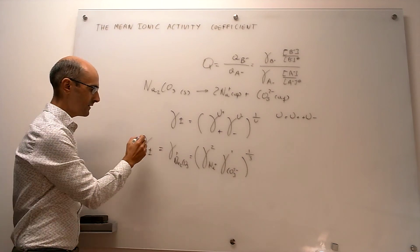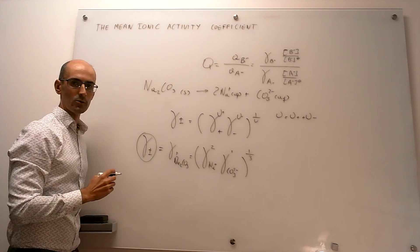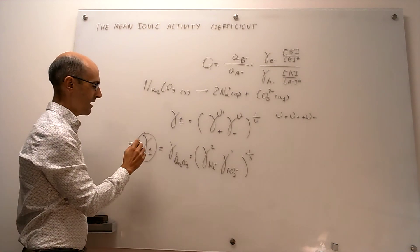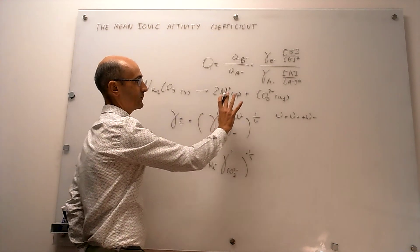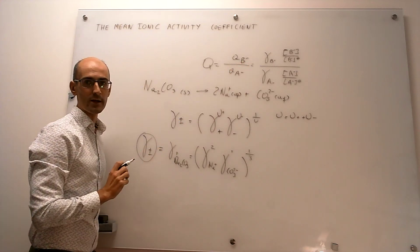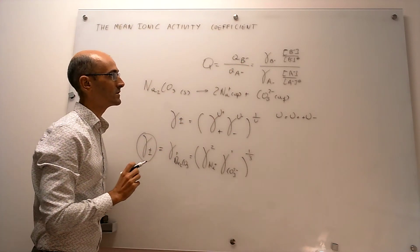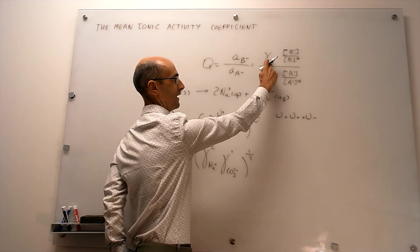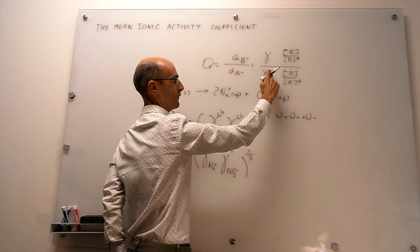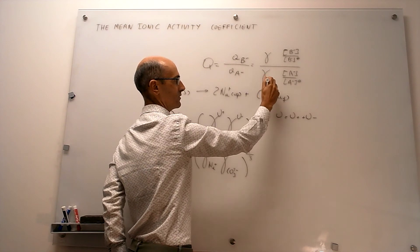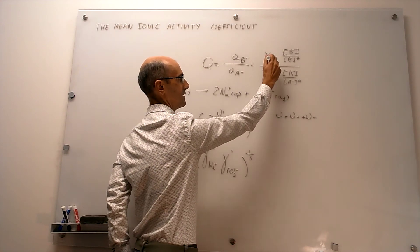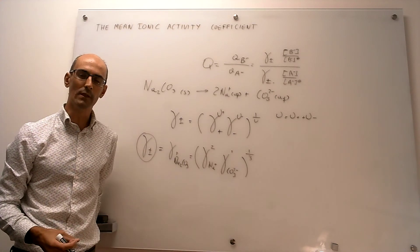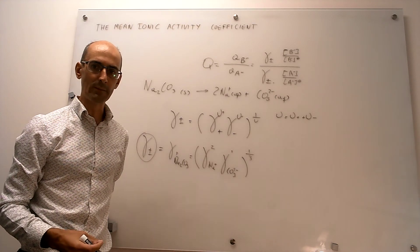Once you calculate or measure this mean ionic activity coefficient, when you write an equilibrium constant, reaction quotient, or any thermodynamic expression, you no longer write the specific activity coefficient for each individual ion. Instead, you write the mean ionic activity coefficient gamma plus-minus. That is how this quantity is used in thermodynamic calculations.